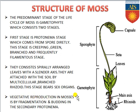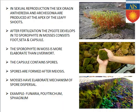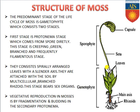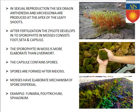Vegetative reproduction in mosses happens by fragmentation, and budding occurs in the secondary protonema stage — there are two types: primary and secondary protonema. In sexual reproduction, the sex organs antheridia and archegonia are produced at the apex of the leafy shoot.